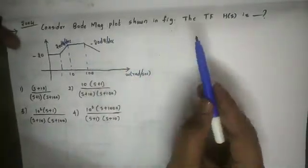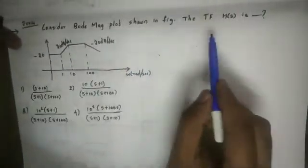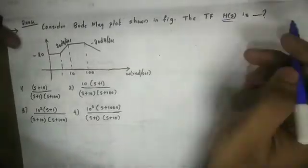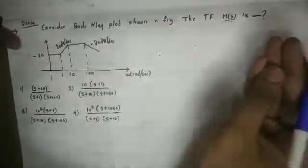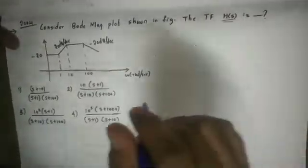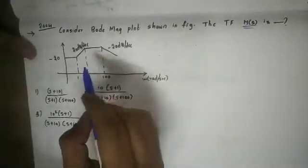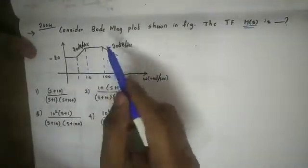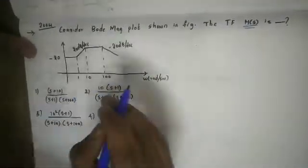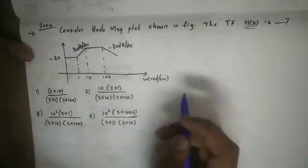The first question is: consider the Bode Magnitude Plot shown in the figure. The transfer function H(s) is to be determined. We have a Bode Magnitude Plot and we need to find the corresponding transfer function.